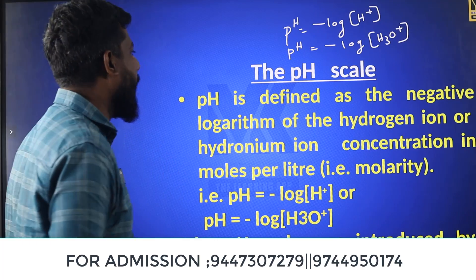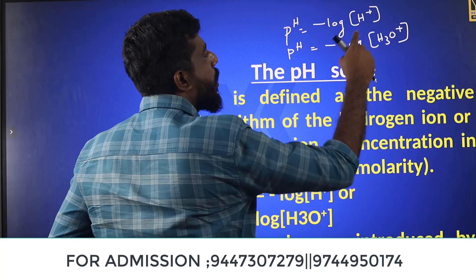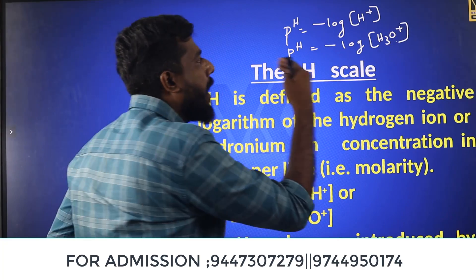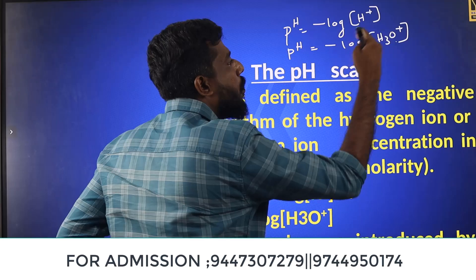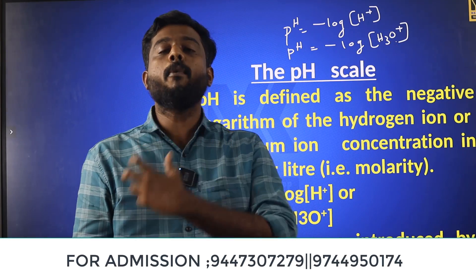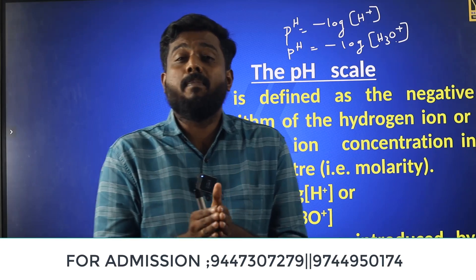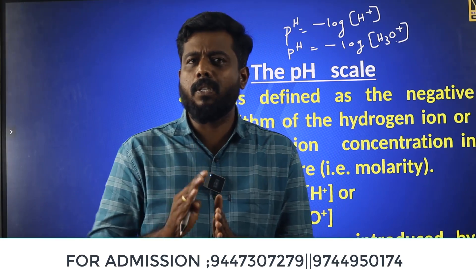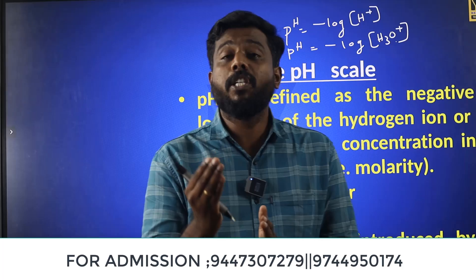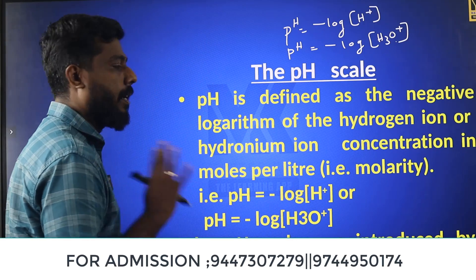pH is defined as the negative log of concentration of H⁺ ion. The full form of pH is Potential Hydrogen. The person who introduced pH is called Sorenson — Potential Hydrogen pH was introduced by Sorenson.